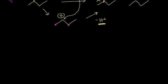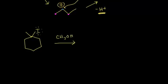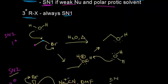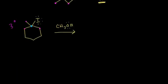For the last example, we have a tertiary alkyl halide with an iodine, reacted with methanol (CH₃OH). This carbon is attached to three other carbons, so it's tertiary. A tertiary alkyl halide is going to be SN1. The first step in an SN1 mechanism is formation of the carbocation: the electrons kick off onto the iodine, forming a tertiary carbocation, which we know is very stable.